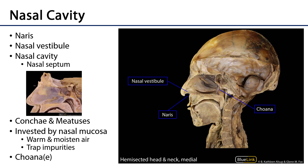There are two nasal cavities, a left and a right, and they are separated by the nasal septum. Here is the nose, as we saw. Here are the nares. We cannot see the columella because it has been cut away, as has the nasal septum on the side, and we're looking at the lateral wall of the nasal cavity here.